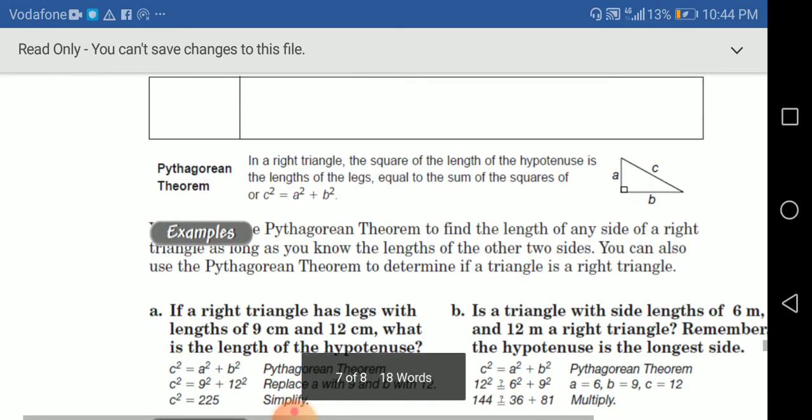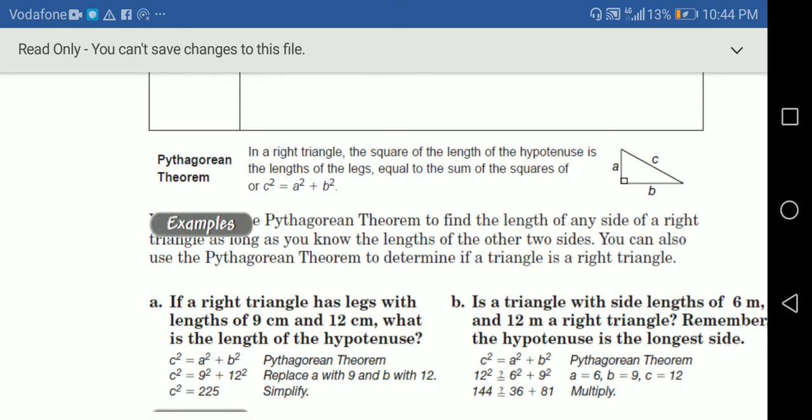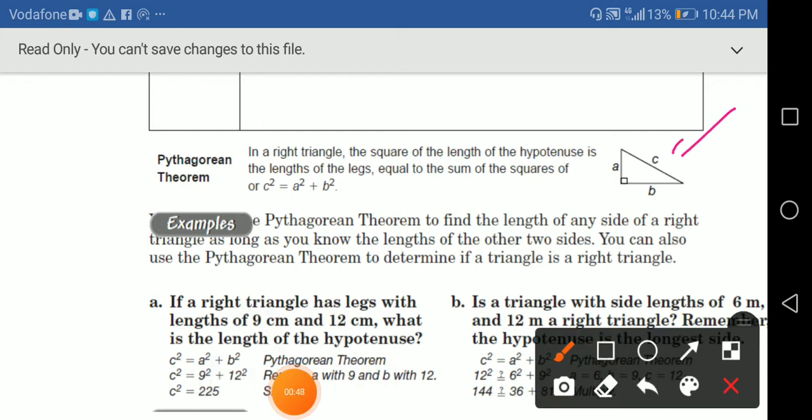We have here in the Pythagorean Theorem, in the right triangle, as you see here, the square of the length of the hypotenuse. I have a rule. C squared. C here, it's the segment of the hypotenuse. So C squared equals A squared plus B squared.